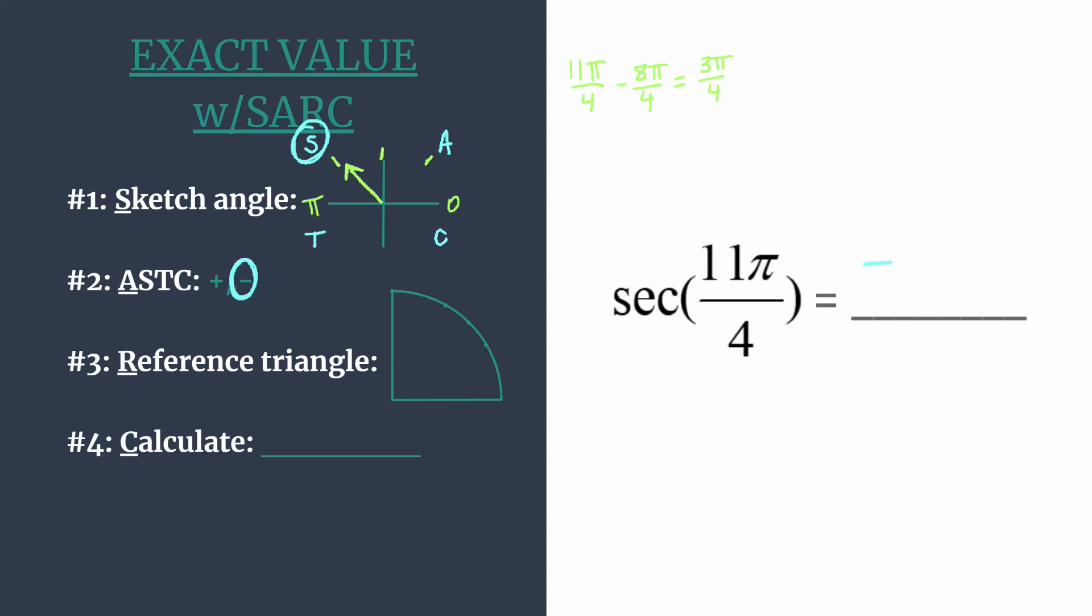And what this does, finding the final sign early, so meaning positive or negative, will help us in that we can simplify our calculations. When we find the reference triangle and coordinates, we will just work in quadrant 1. When we calculate, we won't have any negative signs. And that's because we've already determined our final answer for our exact value is negative.